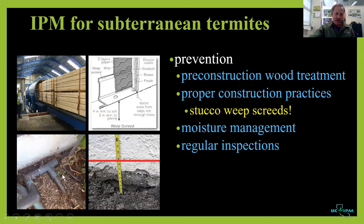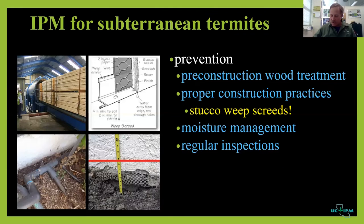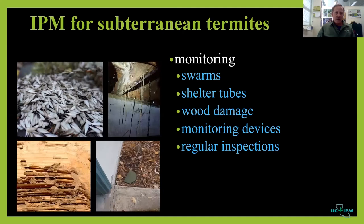Moisture management is important. Any time you have mulch or irrigation — especially faulty or leaky irrigation near a home — you are creating an environment that is inviting to subterranean termites. They are attracted to moisture; they need moisture to survive. Another way we can stay ahead of a termite infestation is by monitoring — looking for signs of subterranean termites and especially signs of termite infestations in our home.